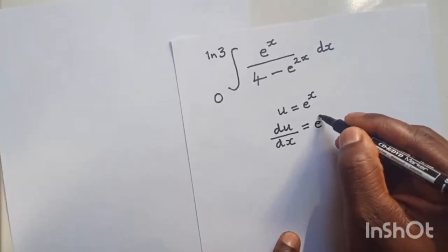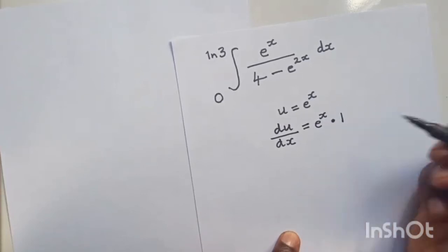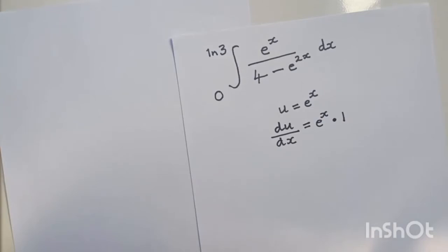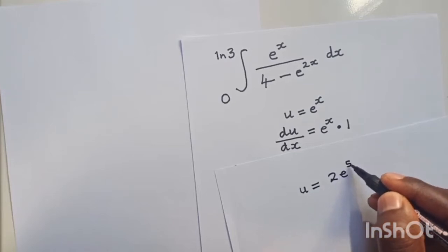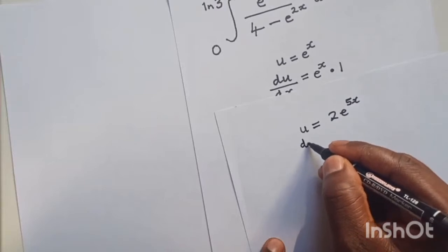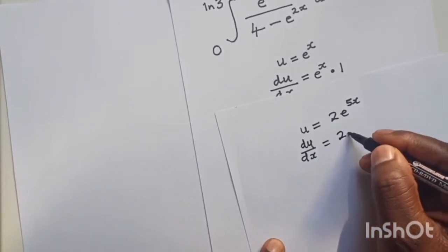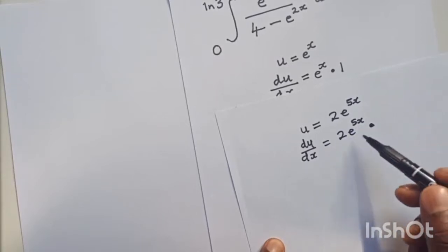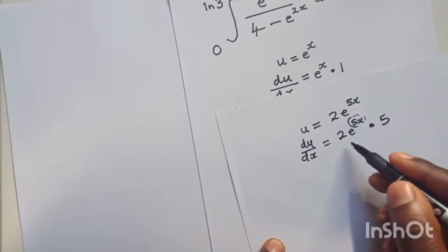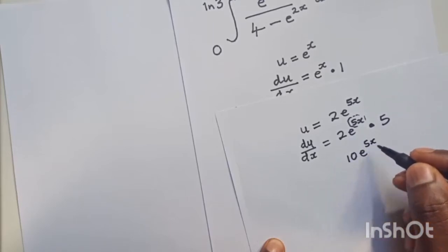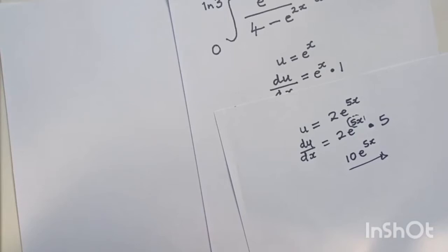So e to the power of x times the derivative of x, which is 1, gives e to the power of x. For example, if u equals 2e to the power of 5x, the derivative du/dx equals the original function multiplied by the derivative of the power. The derivative of 5x is 5, so 2 times 5 gives 10e to the power of 5x as the final answer.